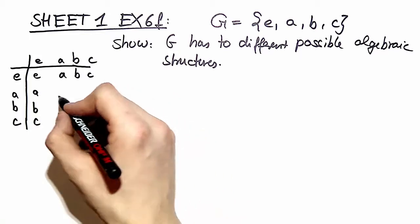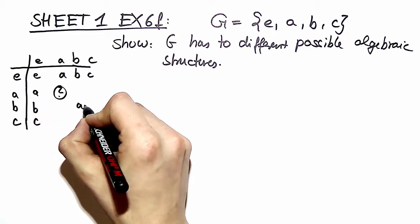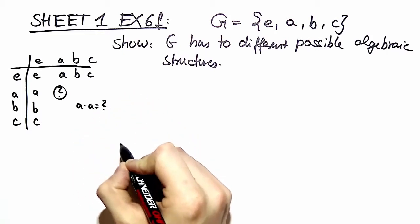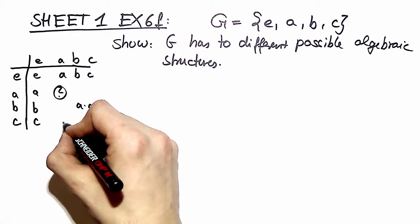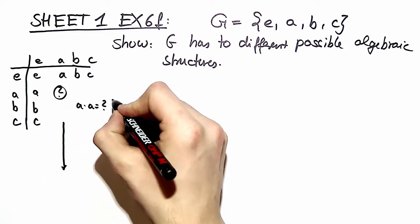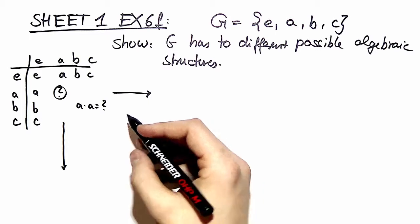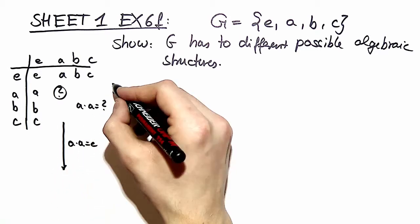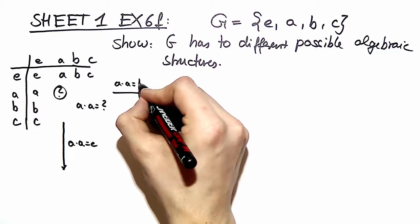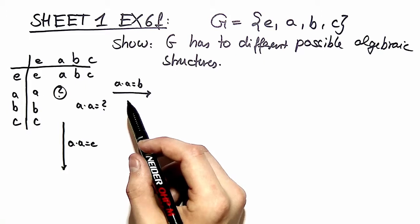Now the first question emerging is what comes right here? What is a times a? We have several different choices. In fact we have two different choices right here. First choice is of course a times a equal to e. Second choice is a times a equal to b. Why are there only these two choices?